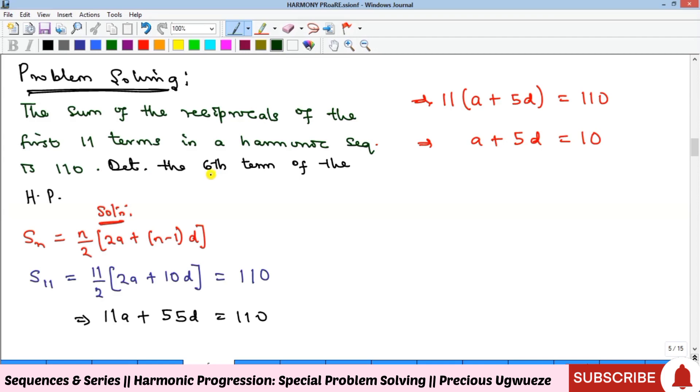They said we should find the sixth term. By definition, what is the sixth term of an AP? The nth term of an AP is given by the formula tₙ = a + (n-1)d.